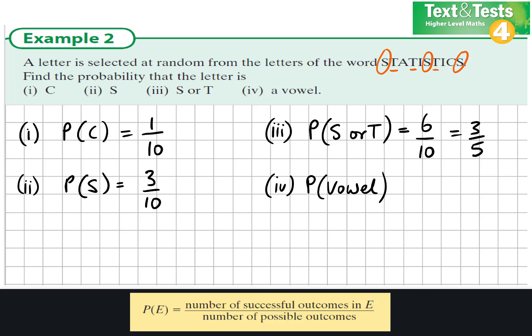And lastly, work out the probability it would be a vowel. When I look at the word STATISTICS, I see that of the vowels A, E, I, O and U, there are 3 of them here. So there is a 3 in 10 chance that you would choose a vowel.